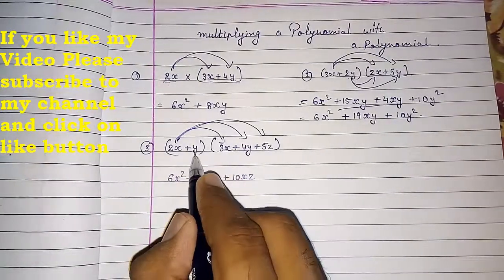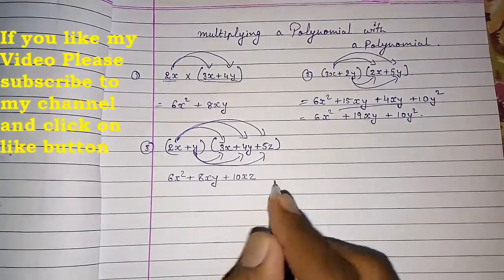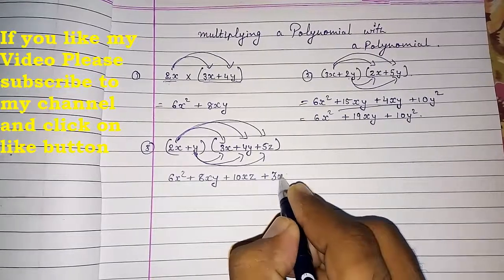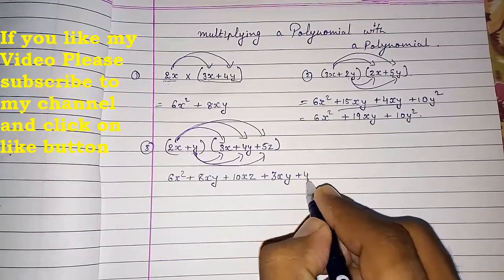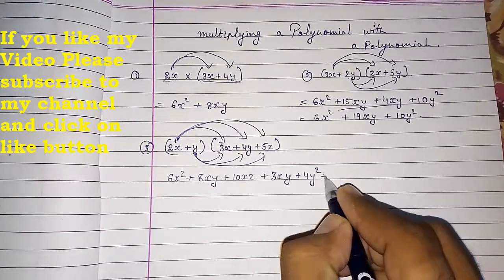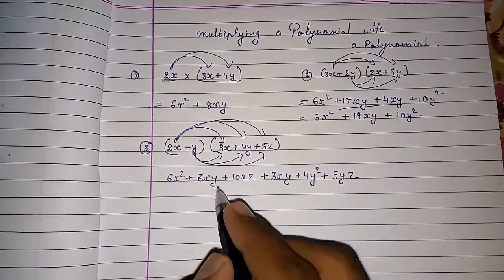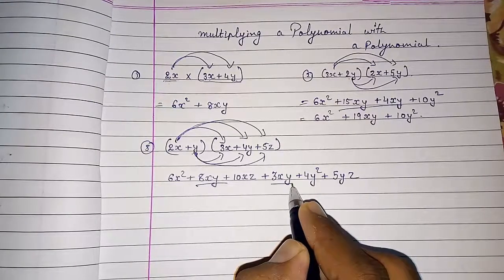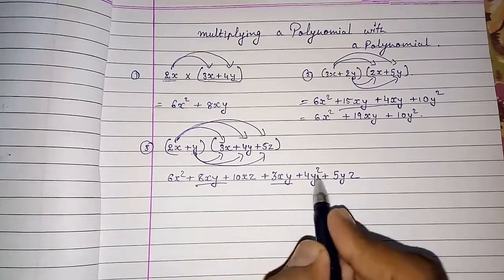Now I have to multiply y with all these numbers. So y into 3x is 3xy. Now y into 4y gives plus 4y square. And then y into 5z gives plus 5yz. Now we have to check whether any like terms are there. Yes, here we are having like terms, so we have to add them.